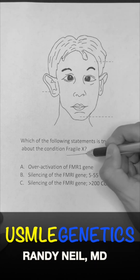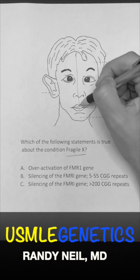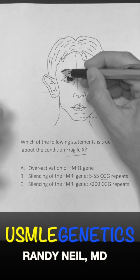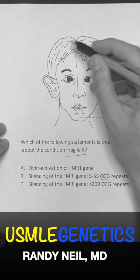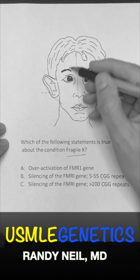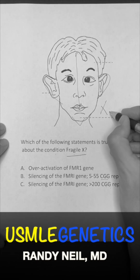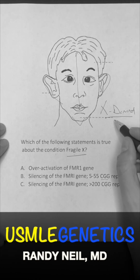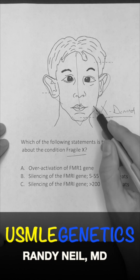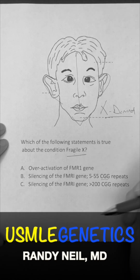So in Fragile X, we know some of the conditions we're going to see are the long face, protruding ears, gross motor delays, large testes, and prominent chin. We know that it's X-linked dominant. So what are we going to see with that? No male-to-male transmission, and if the dad is positive, his daughter would be positive as well.